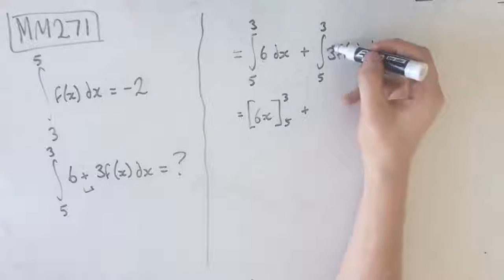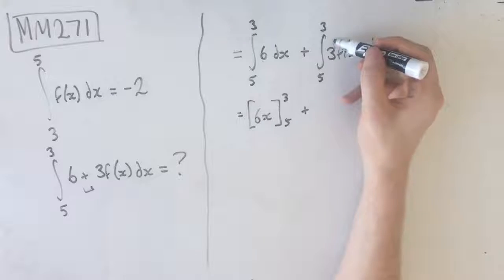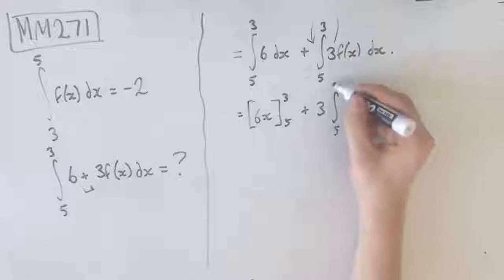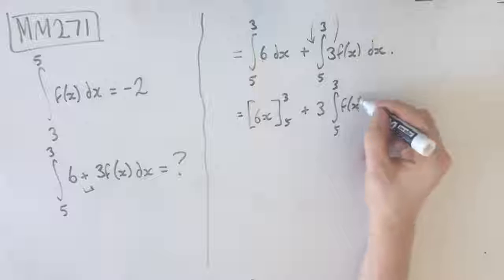And then we're going to add this 3 here, which is a constant, so that can come out the front, which means that we have 3 times the integral from 5 to 3 of f(x) dx.